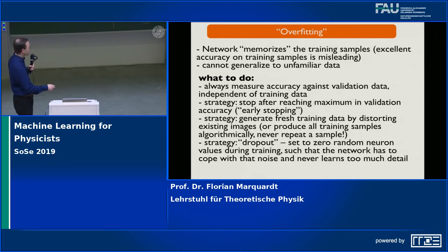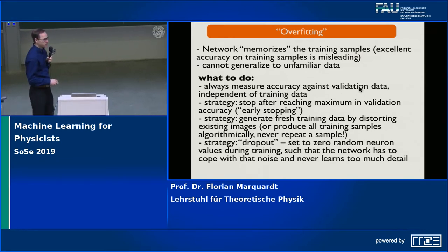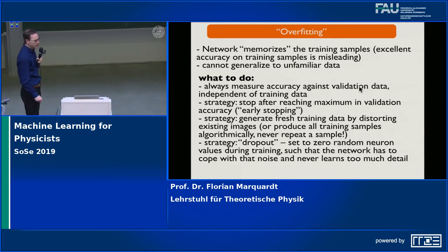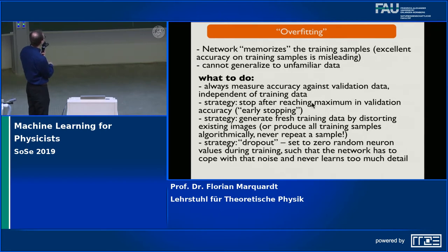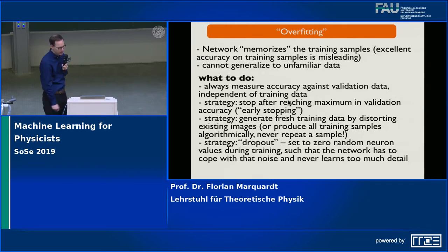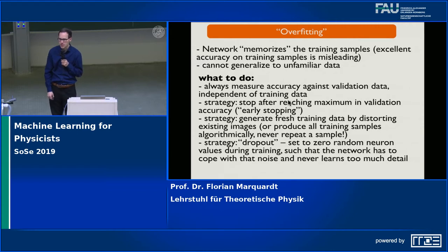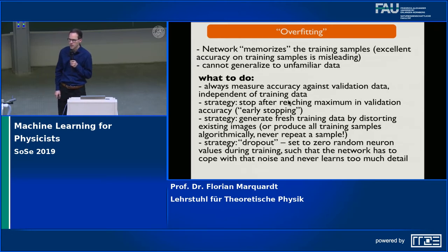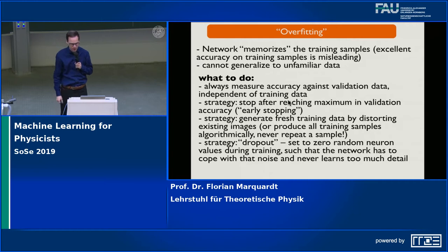The solution is first to always have an honest assessment of accuracy by measuring against the validation data that the network is not trained on. Then you stop training after the validation accuracy has reached its maximum, because after that things only get worse — the network is only memorizing training data. You can also try to get more training samples. If you don't have more, you can generate them: take an image, rotate it a little, stretch it, and the label remains the same. A rotated three still counts as a three.